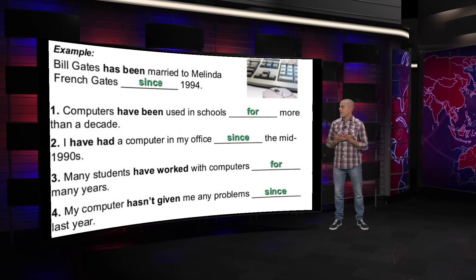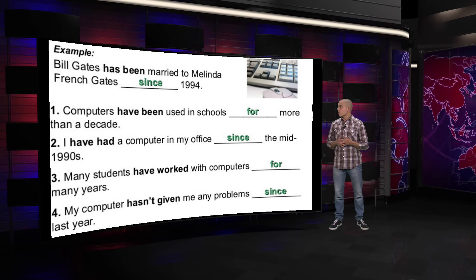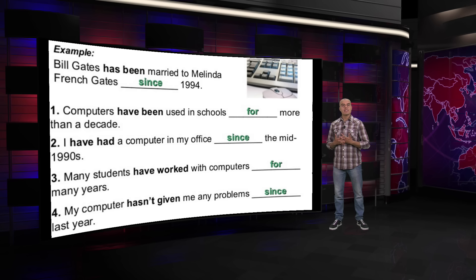Number two: I have had a computer in my office since the mid-1990s — or the mid-90s. This is definite and very accurate in the point of time. Compare with number one — 'for more than a decade' we don't know how much more. But 'since the mid-1990s' is accurate, so you use SINCE.